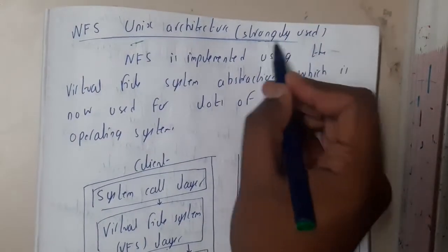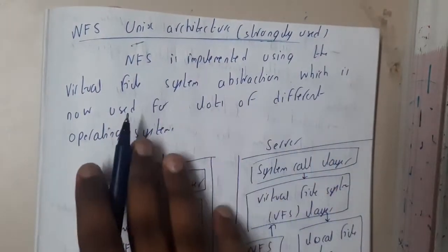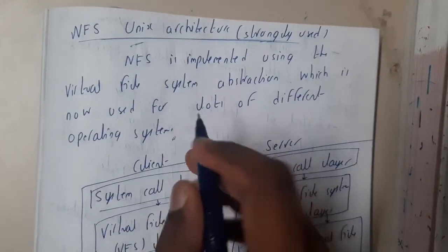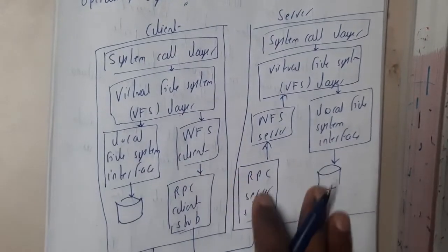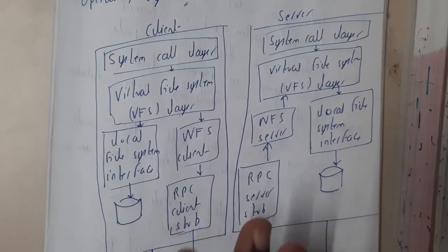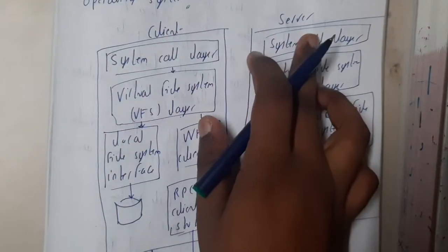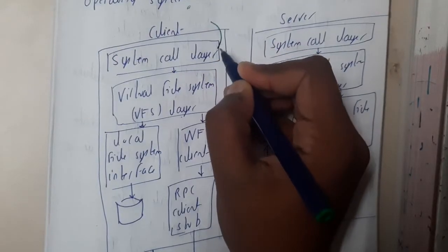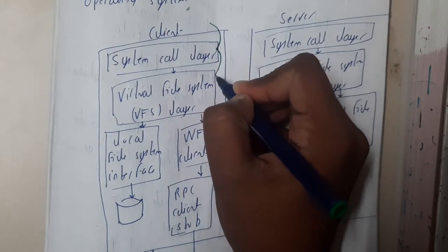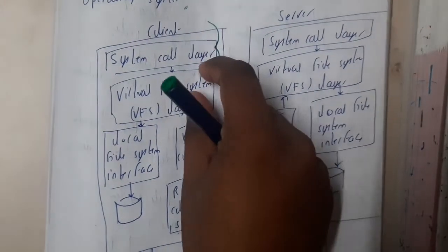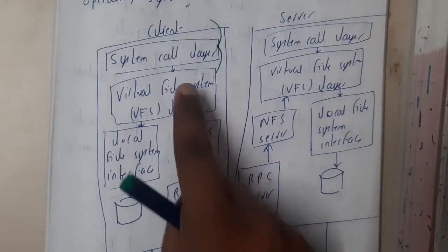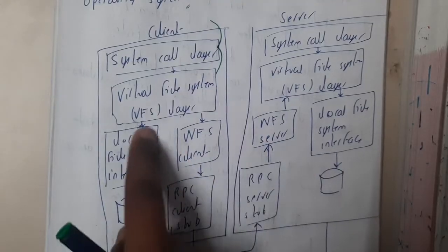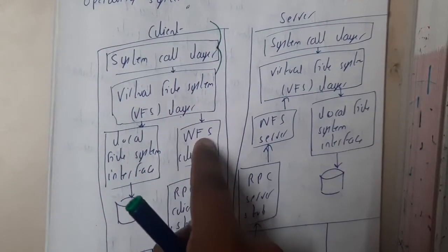Currently, NFS using the Unix architecture is strongly used. NFS is implemented using the Virtual File System (VFS) abstraction, which is now used for many different operating systems — not only Unix, but also Windows and others. On the client side, system calls are made, and those requests are passed to the Virtual File System. The VFS decides whether the file is in the local file system or needs to be fetched from the server.